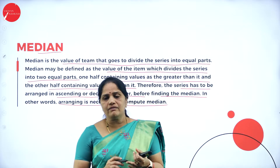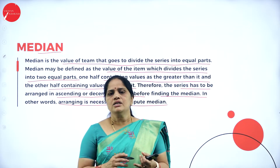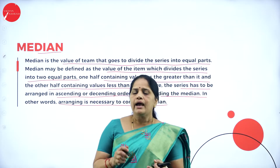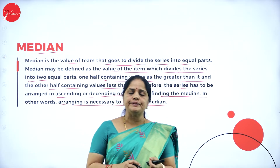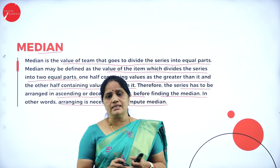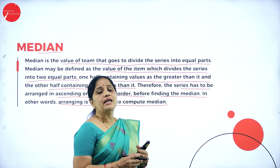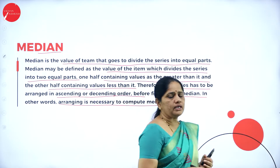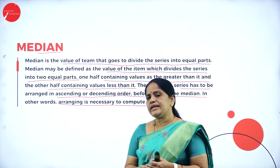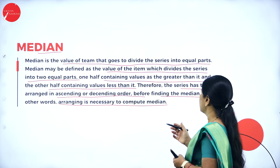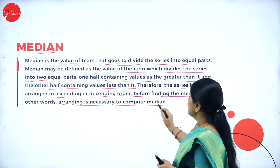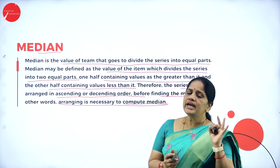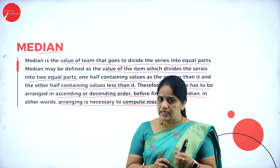Second, the median divides the data into two equal parts — one set of values will be greater than the median, the other set will be less than the median. Thirdly, to find the median, the values must be arranged in ascending or descending order. In other words, arranging is necessary to compute the median. So whenever we are calculating the median, we have to take these three things into consideration.